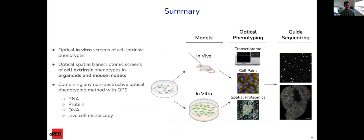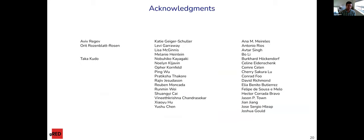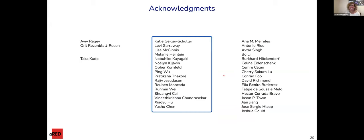In summary, PerturbView is a method for optical in vitro screens of cell-intrinsic phenotypes, cell-extrinsic phenotypes in organoids and mouse models, and it can easily be combined with basically any optical method — RNA, protein, DNA, and live cell microscopy. Thanks to everyone who helped with this work: Aviv, Arit, and of course Taka, who did all the work here.